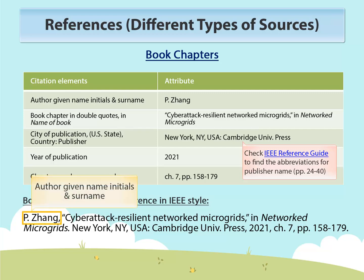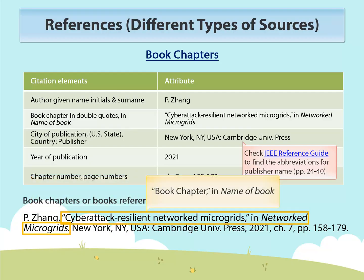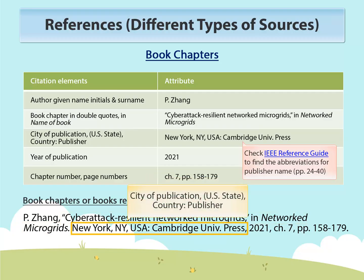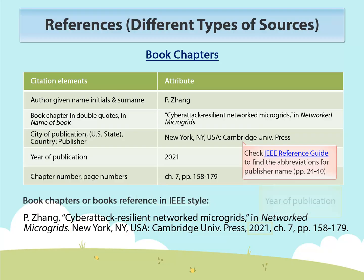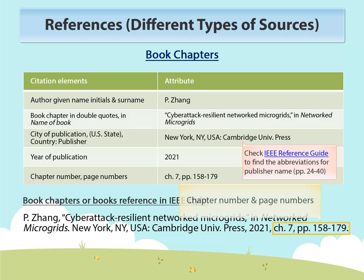To format a book chapter reference in IEEE style, list the author's given name initials followed by their family name. Then put the book chapter title in double quotes, followed by the word 'in', and then the book title in italics. Next, the city of publication — include the state if the book is published in the USA — and then the country of publication, followed by name of publisher. Then the year of publication, and lastly chapter numbers followed by page numbers.